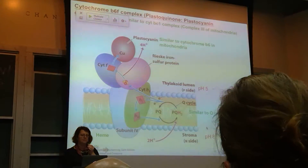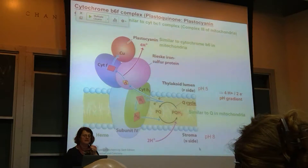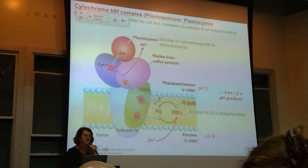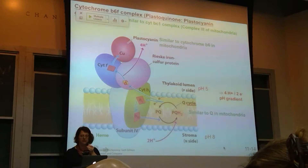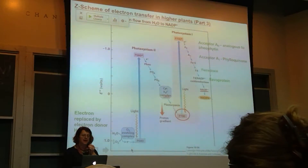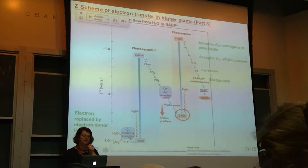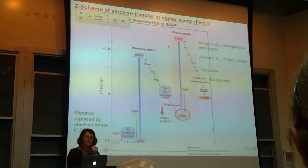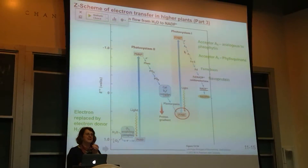Part of the reason the proton gradient is so strong — from the stroma to the lumen side — is that the volume of the lumen is really small. As H+ ions go in, it really impacts the concentration within that volume, and you get a big pH difference. For anyone working on plants, there are many proteins on both sides that are pH-dependent in their activity; in the light, you'll see this pH change cause activation or deactivation of enzymes. Now we need another burst of energy to continue — we pass electrons to the second reaction center: photosystem I.